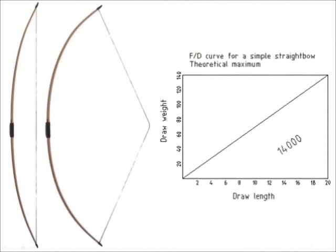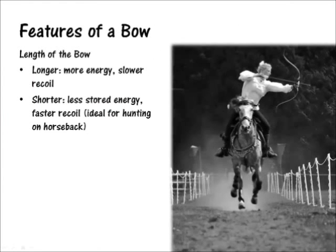In a simple straight bow with no special features, the bowstring has the capacity to store 14,000 units of energy. This is the area under a force draw curve. In terms of length, longer bows store a lot of energy compared to shorter bows. However, longer bows tend to bounce back more slowly.